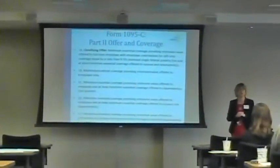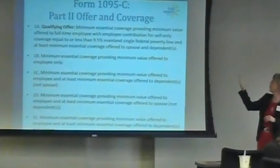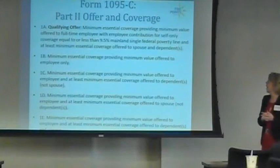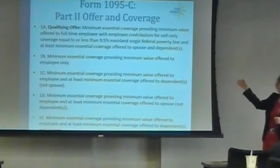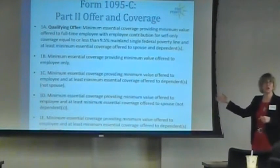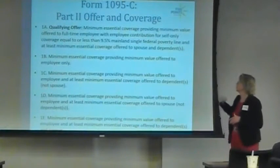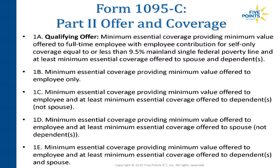If the contribution you offered to your employees is less than 9.5% of the federal poverty limit, you can use the 1A qualifying offer code on line 14. Outside of that you get into specifics. Sometimes multiple codes apply, and you need to understand the hierarchy. 1B is minimum essential coverage providing minimum value offered to employee-only. If your plan is employee-only, that's a 1B — you may be at 9.5% of federal poverty limit, but you're not offering coverage to spouses and dependents.